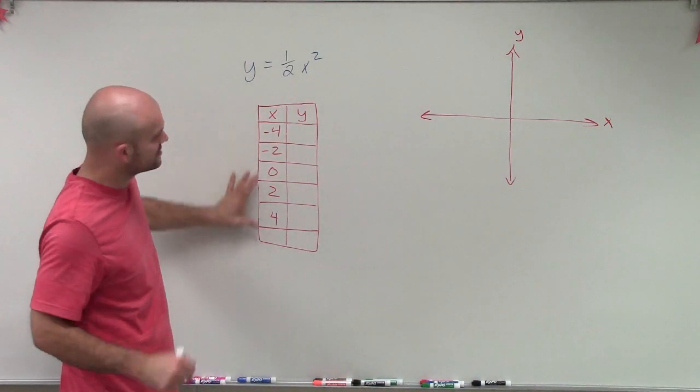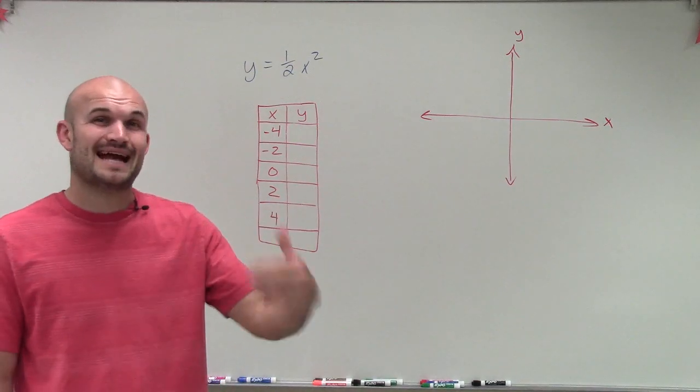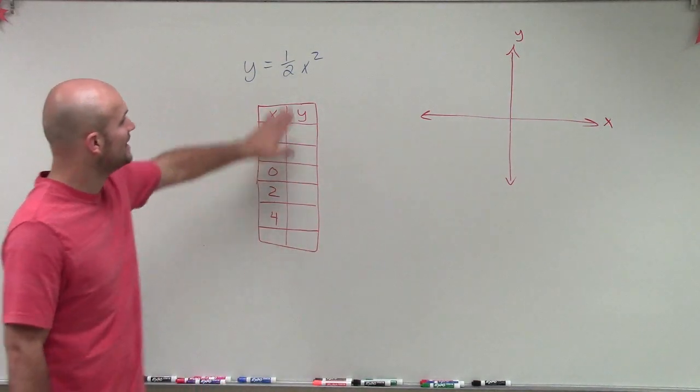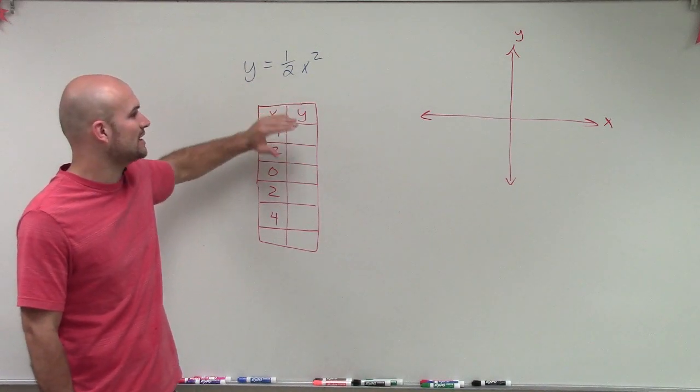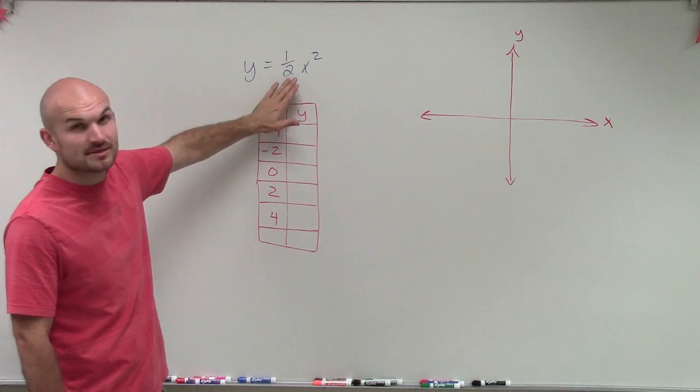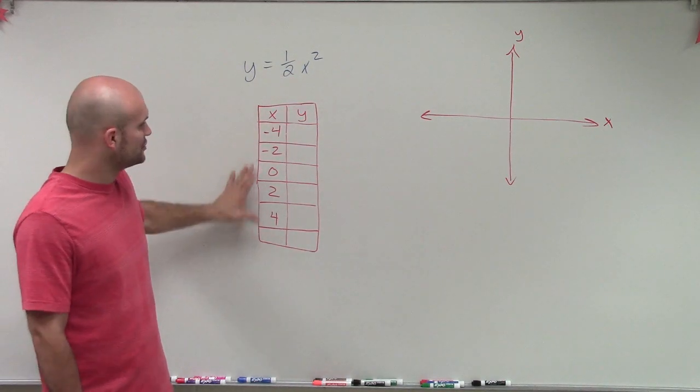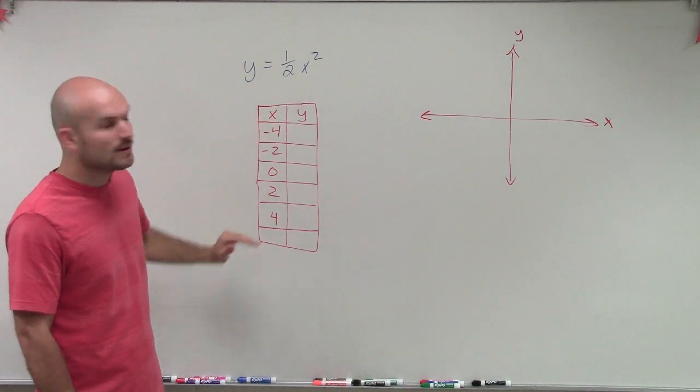So now what we're going to do is we're given. So what we did is we chose some x-coordinates. Now, as I mentioned, you can choose any x-coordinate that you want to. As these equations get a little bit more complicated, we're going to learn on how to better choose your points. But for right now, when we have something in this format, and just as our introduction to learn, we're just going to go through a set of values. And I'm going to choose at least two negative, zero, and then two positive.